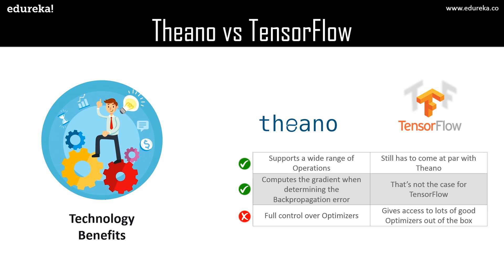If you talk about the technological benefits, Theano supports a wide range of operations and TensorFlow still has to come up to par with Theano in that aspect. Theano computes the gradient when determining the back propagation error, which is not the case for TensorFlow. In Theano you have full control over optimizers as you have to hard code them, whereas TensorFlow gives access to a lot of good optimizers out of the box, which makes coding easier.